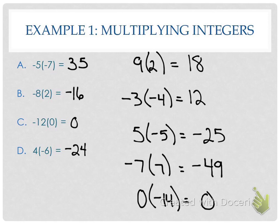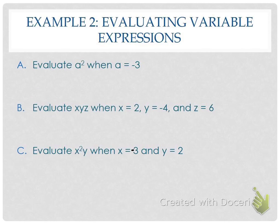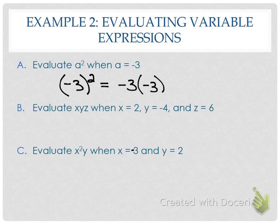Now let's throw in some variables. We're going to substitute and solve. Let's look at example A first: evaluate A squared when A equals negative 3. If we're raising a negative number to an exponent, we need to place it in parentheses. It tells me that I'm multiplying that number by itself: negative 3 times negative 3. How many negatives do I have? Two — so is my answer positive or negative? Positive. It's positive 9.